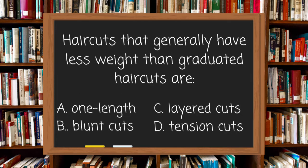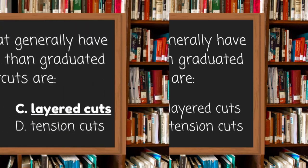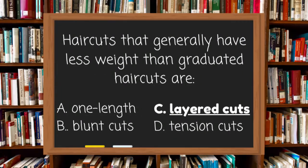Haircuts that generally have less weight than graduated haircuts are: A. One length, B. Blunt cuts, C. Layered cuts, or D. Tension cuts. The answer is C, layered cuts.